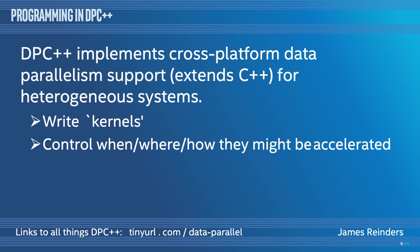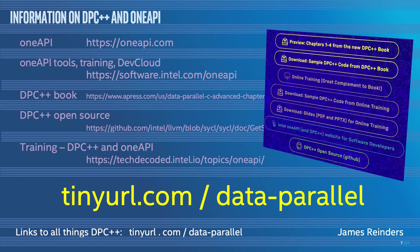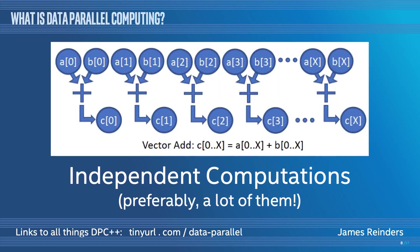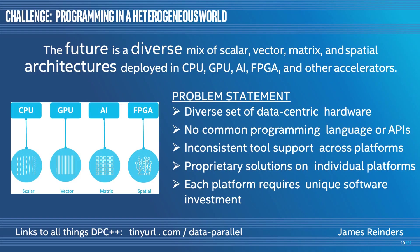DPC++ implements data parallelism for heterogeneous systems. As a programmer, the big questions are: how do I control where things run, and how do I write something that runs there? The world's heterogeneous, and that's a key message Intel's carrying with OneAPI and DPC++ — a set of consistent tools to let all the hardware shine. Anything that emphasizes one piece of hardware solving all your problems worries me; as a programmer, I'd rather be able to address all of them.